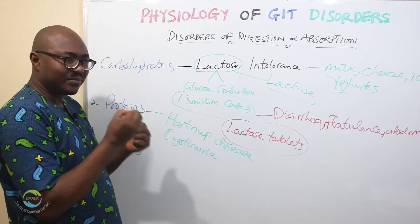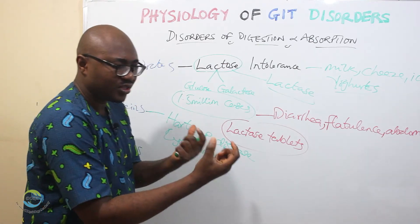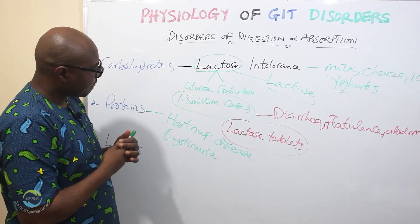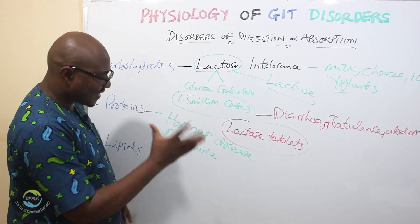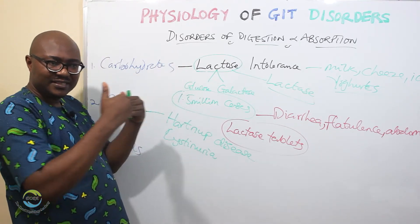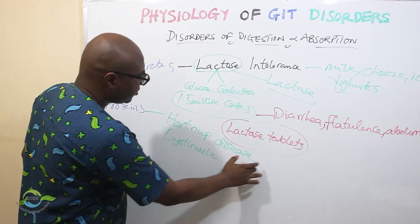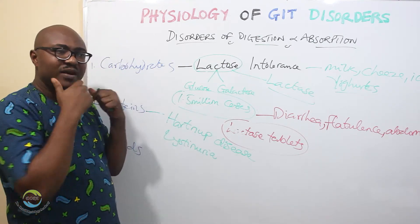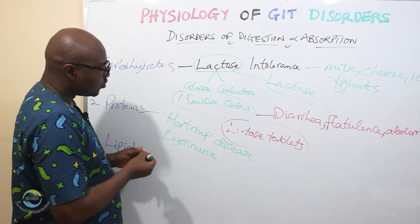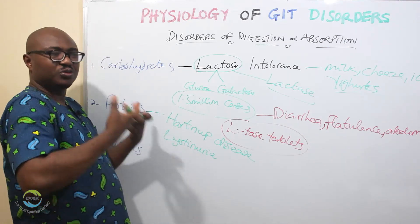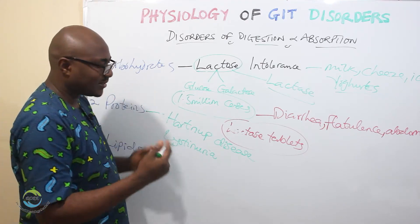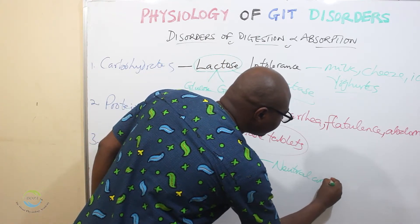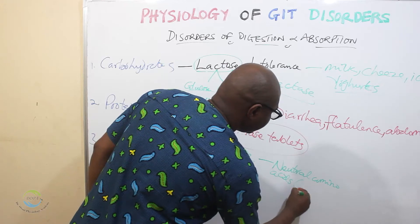You need to inherit from both parents for it to manifest. Hartnup disease involves an inability to absorb neutral amino acids, especially tryptophan. Cystinuria involves a problem with the absorption of basic amino acids.